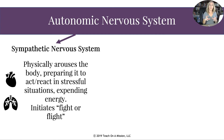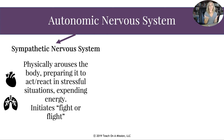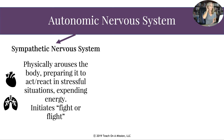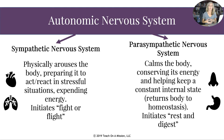Under the autonomic nervous system we have two subdivisions: sympathetic and parasympathetic. The sympathetic nervous system controls the physical arousal of your body — not sexual arousal, but the arousal necessary to handle stressful situations. It prepares your body to act or react in stressful situations, expending energy and initiating your fight-or-flight response.